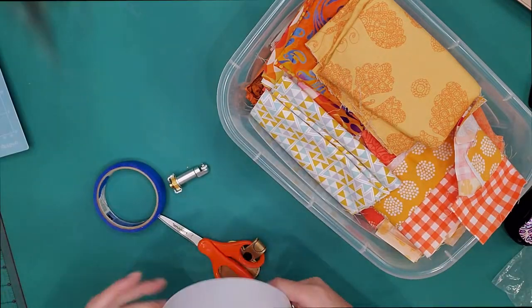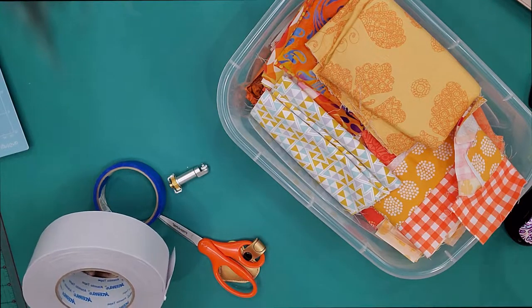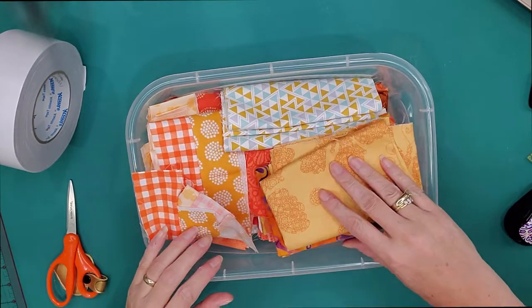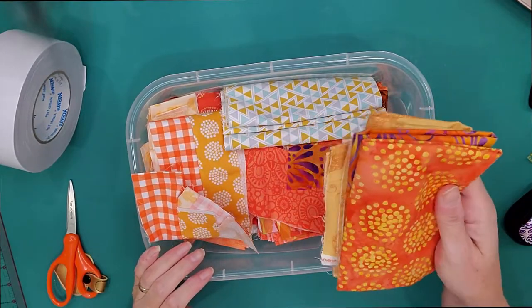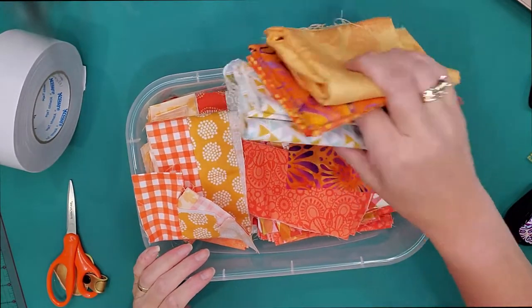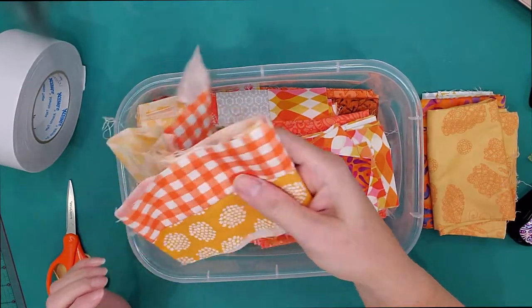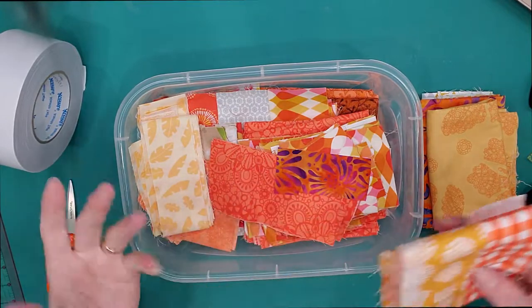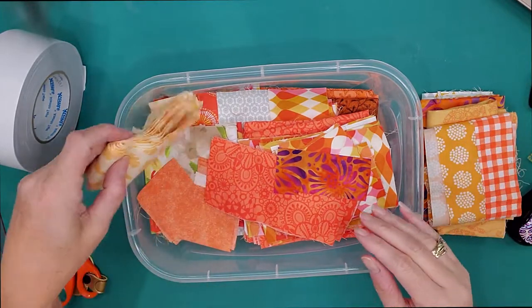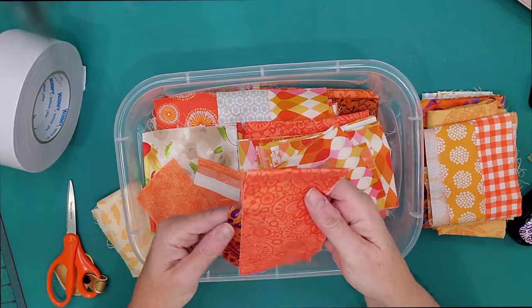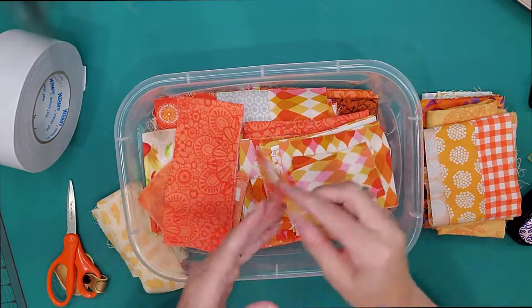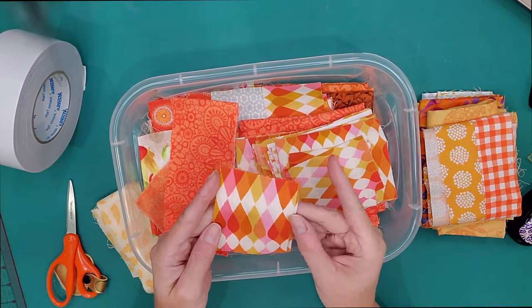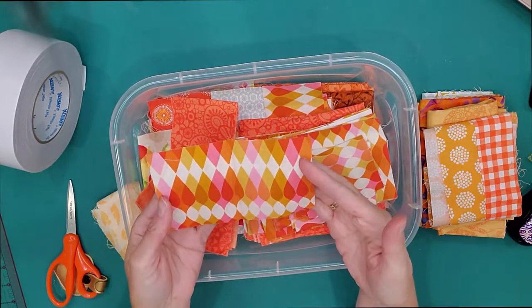So the very first thing we want to do is pick out some fabric. I'm a quilter if you don't know that already. So I save my scraps from when I've made quilts before. We just want to find something kind of fun. I'm going to do a pumpkin sticker.